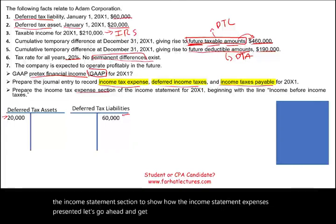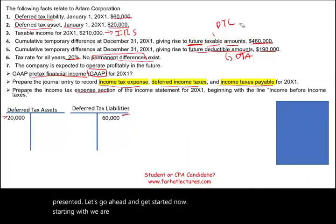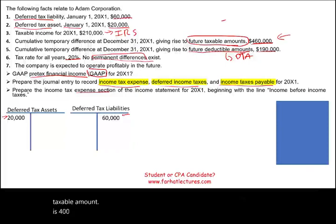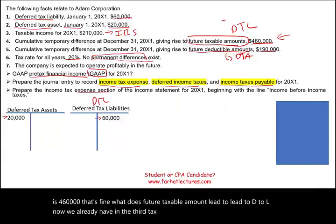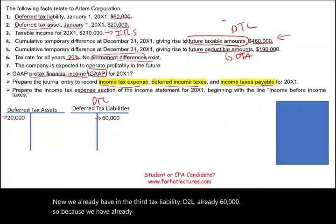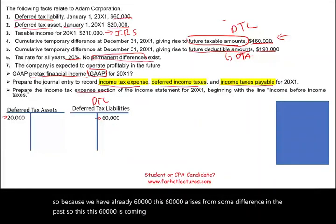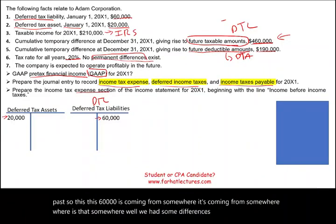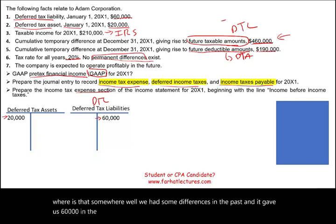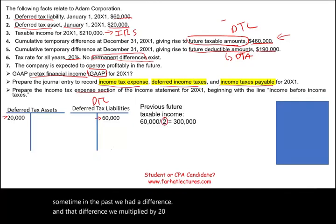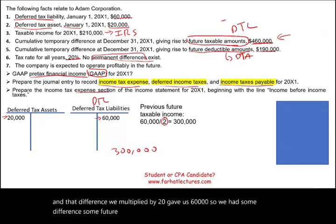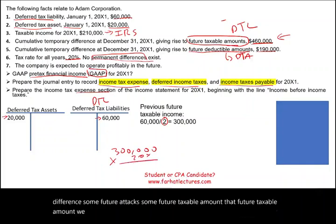Starting with the future taxable amount of $460,000 — what does this lead to? It leads to deferred tax liability. We already have a deferred tax liability of $60,000. This $60,000 arose from some difference in the past. Working backwards: $60,000 divided by 20% gives us $300,000 of previous future taxable amount. We are told the cumulative temporary differences giving rise to future taxable amount is now $460,000 — it increased from $300,000 to $460,000. So this year we have additional future taxable income of $160,000.